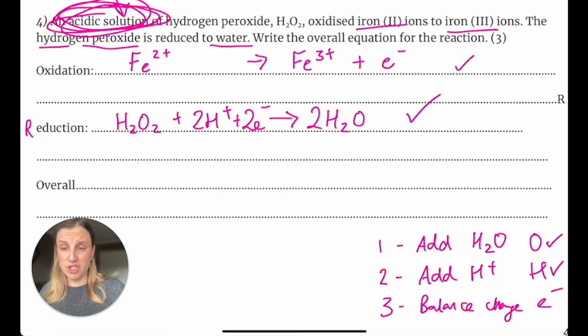You could double check what you're doing by checking that for oxidation, you've got the electrons being lost and on the right side reduction. You're gaining electrons there on the left side. You're checking what you're doing as you're going through.